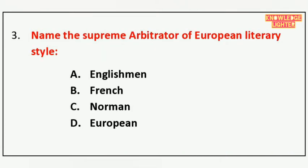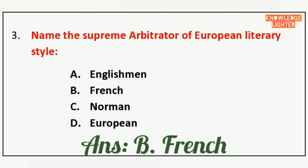Your next question is: Name the Supreme Arbitrator of European Literary Style — option A Englishman, option B French, option C Norman, option D European. And the correct answer is option B French.